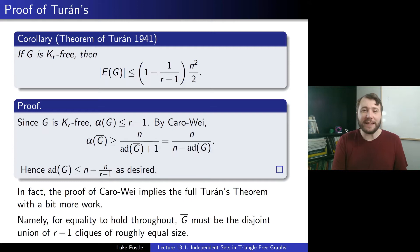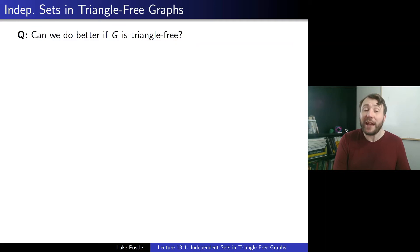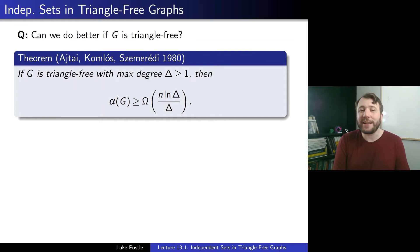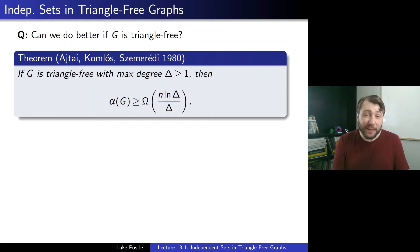That's the connection between Karo-Way average degree bounds and extremal graph theory. Now we turn to triangle-free graphs. Can we do better than the greedy bounds if G is triangle-free? The answer is yes. There is a theorem of Ajtai, Komlós, and Szemerédi from 1980 that says if G is triangle-free with maximum degree delta (at least 1), then alpha(G) is at least omega(log delta / delta). That's with the natural log, and we get an extra log delta factor over the greedy bound.